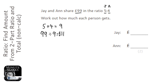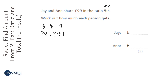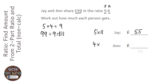So there's going to be £11 in each of those piles. Jay is going to get 5 of those piles, each pile having £11 in. So to work out how much Jay gets, we just do 5 times 11, which is 55. To work out how much Ann gets, we do 4 times 11, because she's going to get 4 piles of this £11. So that's going to be 44.